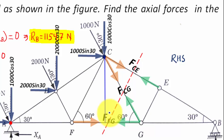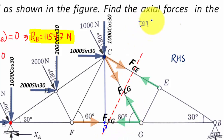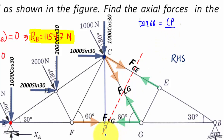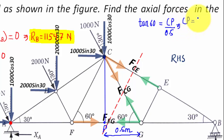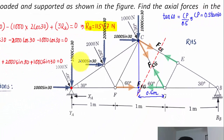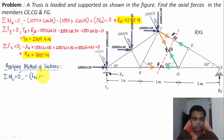To find the perpendicular distance CP: in triangle CPG, the angle at G is 60 degrees. So tan 60 = CP / PG. PG = 0.5 meters, therefore CP = 0.5·tan 60. This value is substituted as the perpendicular distance in the moment equation.